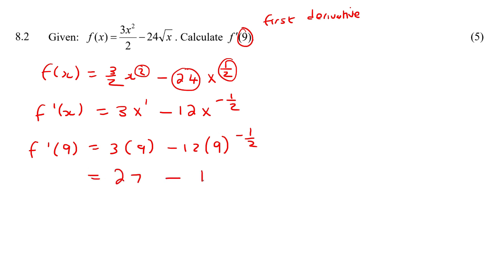We know that 9 to the negative 1 half is the same as 9 to the half, just by putting it at the bottom. And we know that a half exponent is the same as a square root. So we could even do it like that. And so if we go calculate, that'll be 27 minus 12 over 3, which would be 27 minus 4, which is 23.